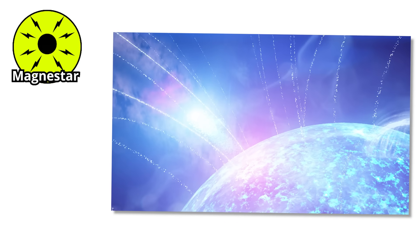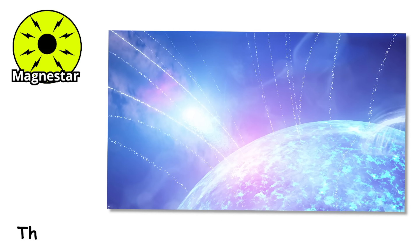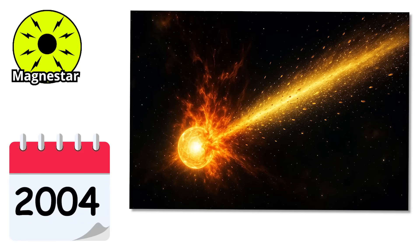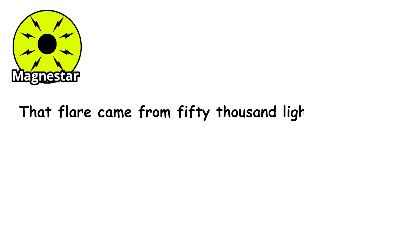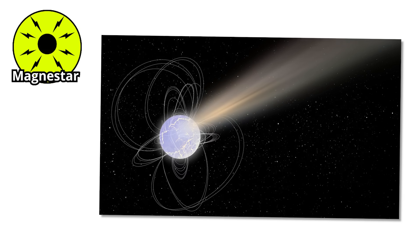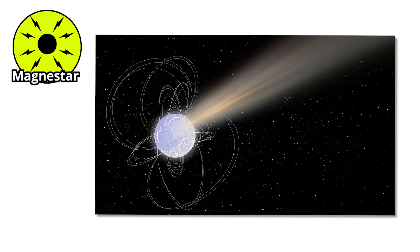They are also unstable. Magnetars can release flares that are so powerful, they have been detected from across the galaxy. One flare in 2004 blasted Earth with more energy than the sun produces in a quarter of a second. That flare came from 50,000 light years away and still affected satellites and instruments here. If a similar event happened much closer, it could fry our atmosphere in seconds.